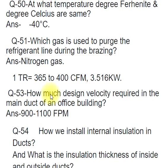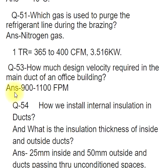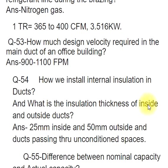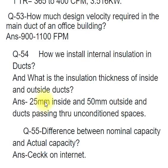Q53: How much design velocity is required in the main duct of an office building? ANS: 900–1100 FPM. Q54: How do we install internal insulation in ducts? What is the insulation thickness inside and outside? ANS: 25 mm inside and 50 mm outside for ducts passing through unconditioned spaces.